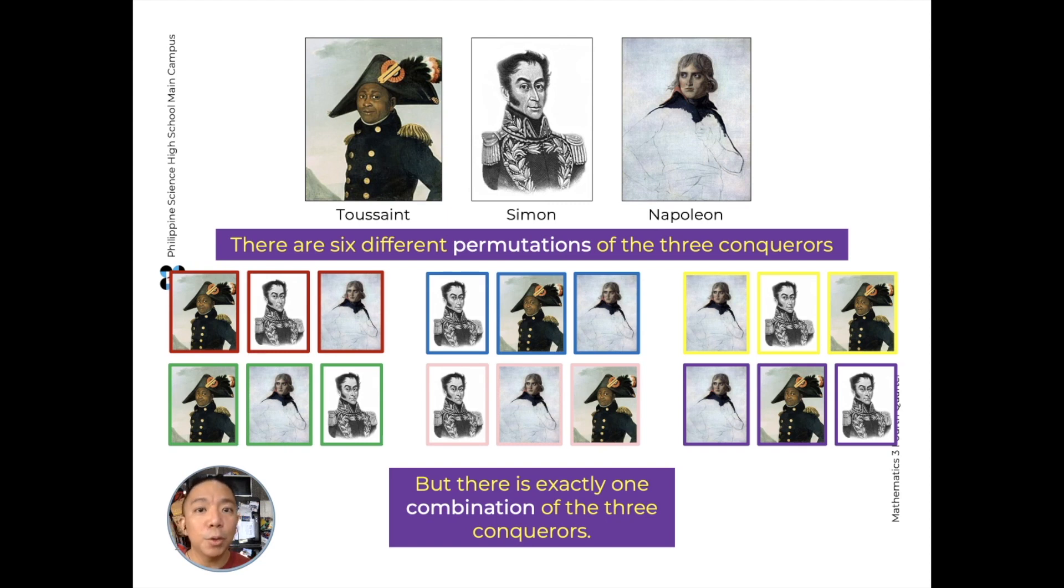We just have Toussaint, Simone, and Napoleon, and we'll always have them if we don't need to arrange them in any order. So we need to make a distinction between permutation and combination. When we have a permutation, it is a specific arrangement. But when we have a combination, the arrangement does not matter.